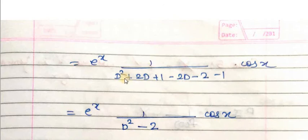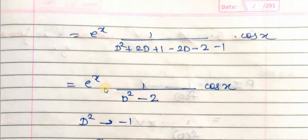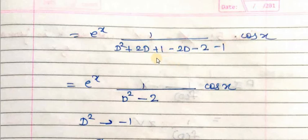Simplifying the denominator using (a+b)² expansion: (D+1)² = D² + 2D + 1, then -2(D+1) = -2D - 2, and minus 1. Combining: D² + 2D + 1 - 2D - 2 - 1. The +2D and -2D cancel, and +1 - 2 - 1 = -2. So it becomes one over (D² - 2) with e raised to x and cos x as they are.